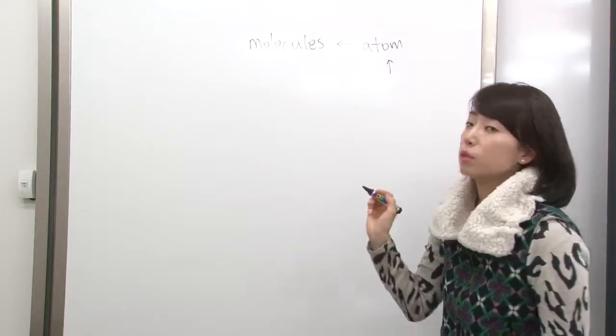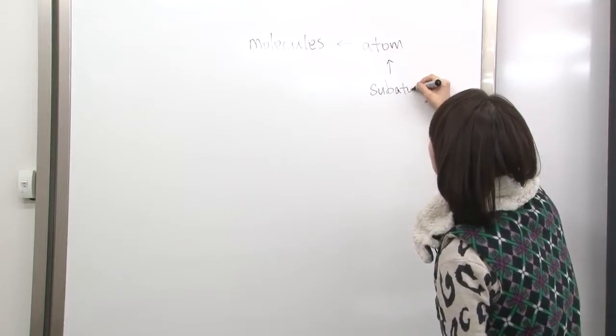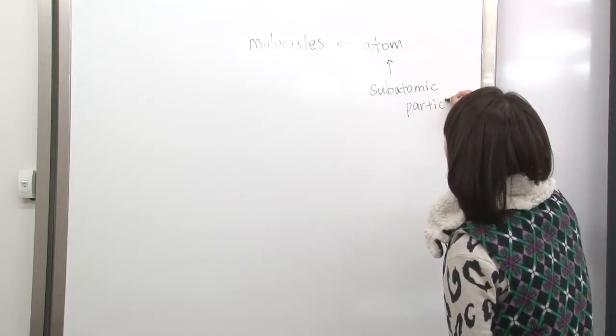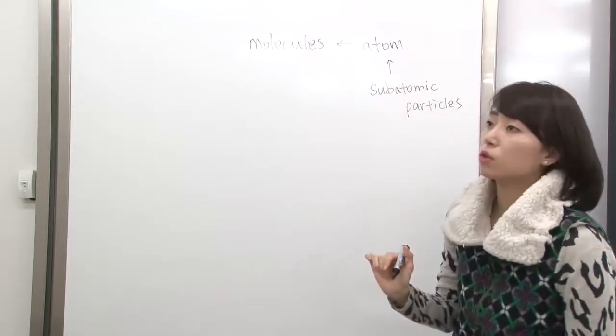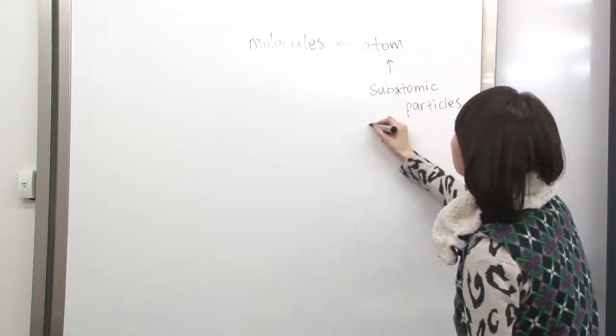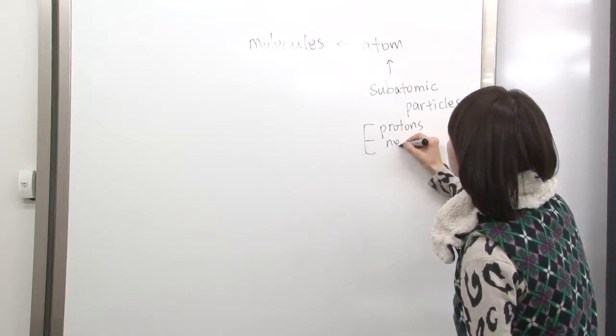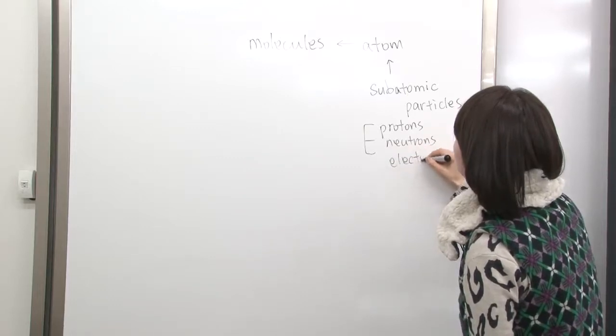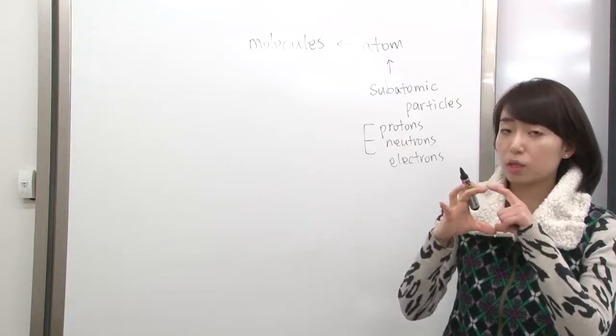So what makes up the atoms? In here, you have particles that are called subatomic particles. The types of subatomic particles, we have three different types. We have protons, neutrons, and then electrons. These three particles actually make up the atomic structure.